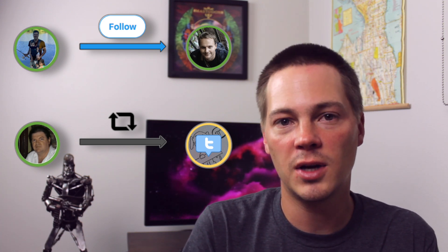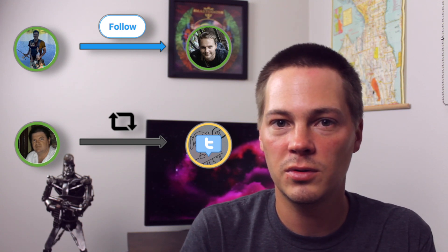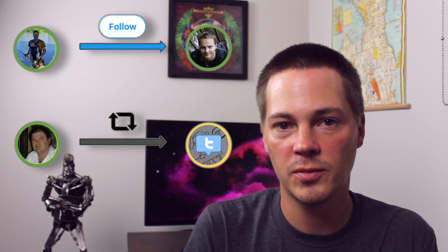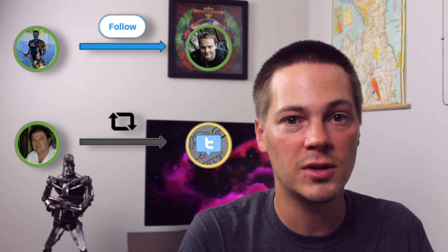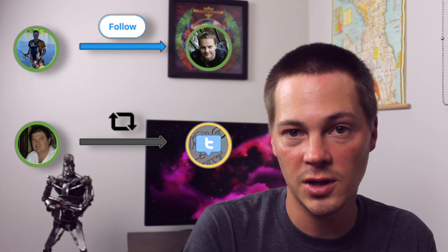So in just this tiny little graph, you have two different node types. You have people nodes, and you have tweet nodes. And then you also have different relation types. So you have a follows relation, and a retweet relation.